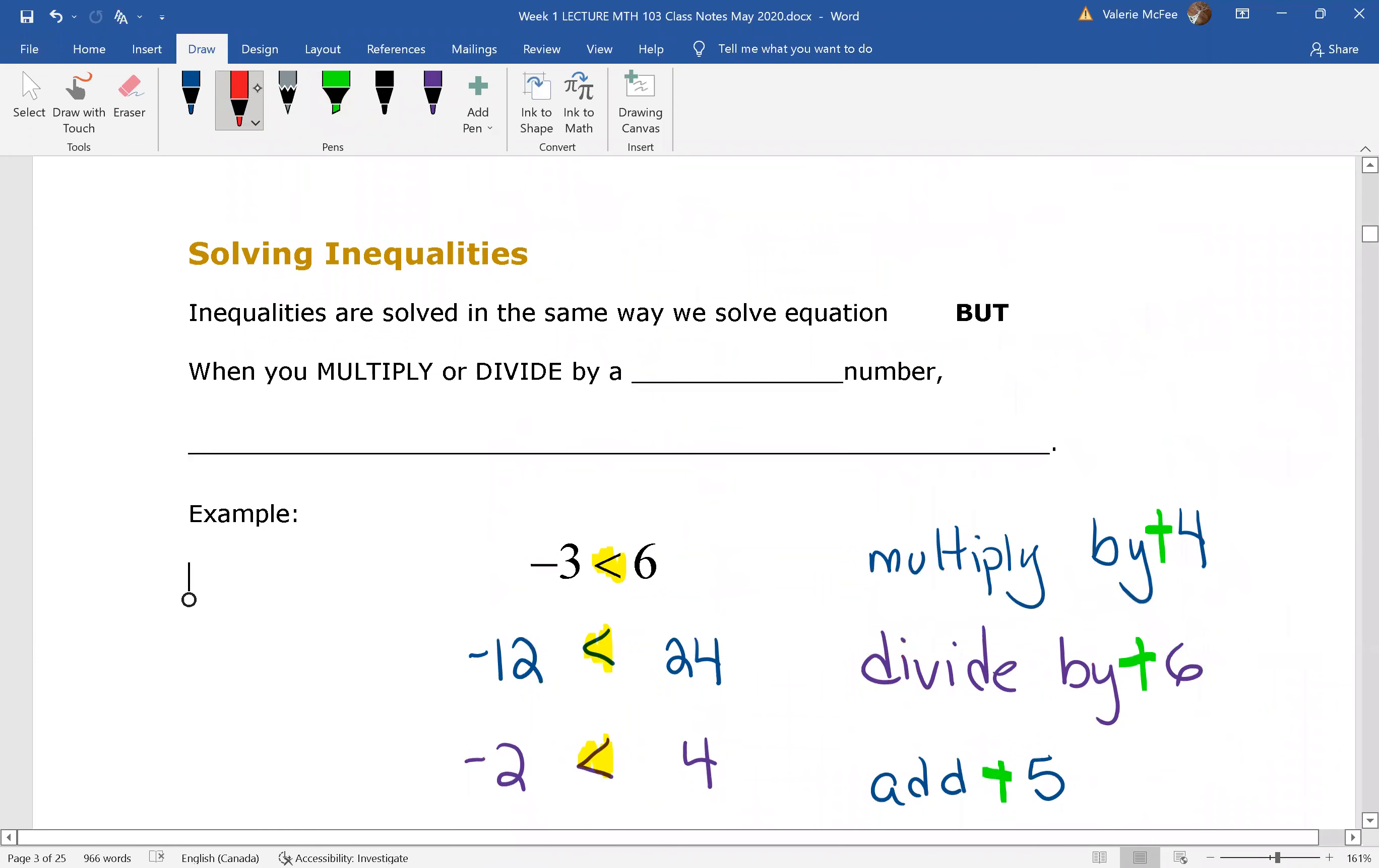So we're going to do everything the same as we do for a regular equation. But when we have an inequality, whenever we are multiplying or dividing by a negative number, you have to remember that the sign changes direction.